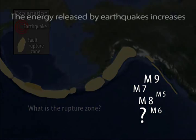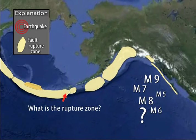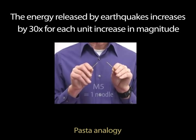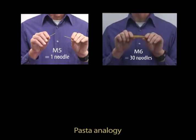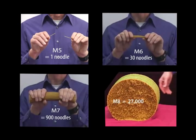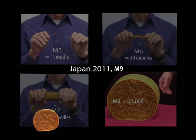The energy released by earthquakes increases by a factor of 30 for each unit increase in magnitude. As an analogy, if breaking a single strand of pasta represents a magnitude 5 earthquake, then we need to break 30 strands to represent a 6, 900 strands for a 7, and 27,000 noodles to represent a magnitude 8. To represent the energy released in a magnitude 9 earthquake, like the recent earthquake in Japan, we would need to break an immense bundle of 810,000 noodles. And the Alaska 1964 earthquake was even larger at magnitude 9.2.